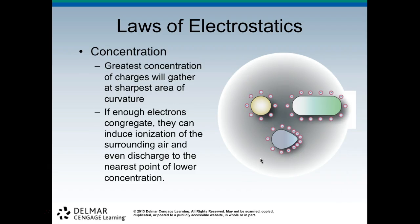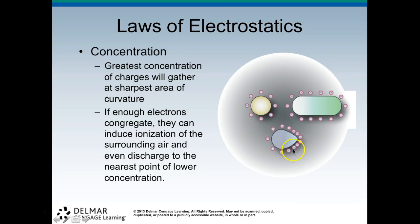Concentration: the greatest concentration of charges will gather at the sharpest area of curvature. At real sharp turns there will be the highest concentration. Within the x-ray tube you'll begin to realize that there are no sharp points anywhere — everything is rounded because we don't want any concentration of electrons in one specific area. If enough electrons congregate, they can induce ionization of the surrounding air and even discharge to the nearest point of lower concentration. We don't want any sharp turns, as you can see here with the higher concentration at the sharp turn.